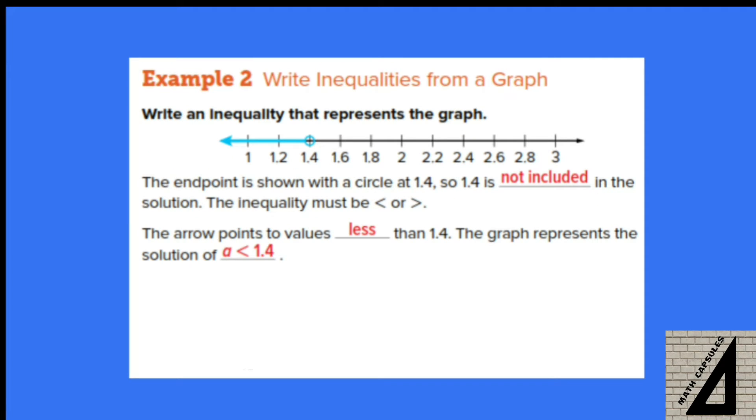Another example: write an inequality that represents the graph. We have the graph at 1.4 with an open circle and all the points that are less than 1.4 because the arrow points to the left. So this means that the inequality will be a less than 1.4.